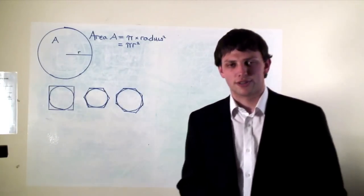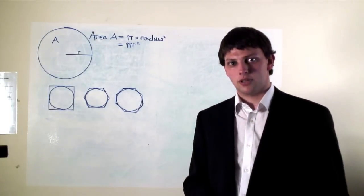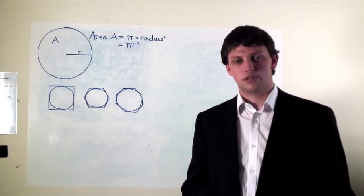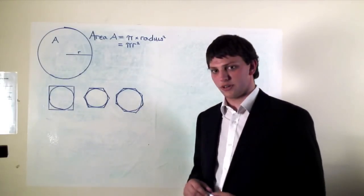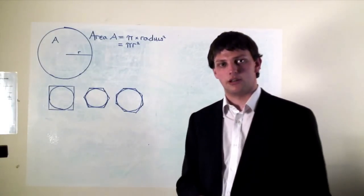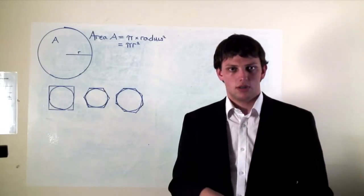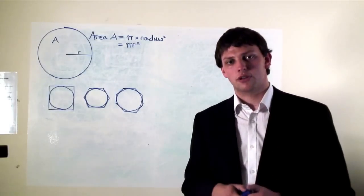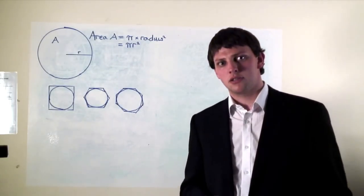So what use are these polygons in attacking the circle? If we have a circle, we can draw a regular polygon around it so that it just touches the circle. As we increase the number of sides the polygon has, it gets closer and closer to the circle, and in particular its area gets closer and closer to the circle's area. So we have one key fact: we can draw a regular polygon around our circle whose area is as close as we like to the circle's area.